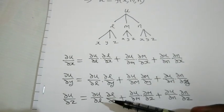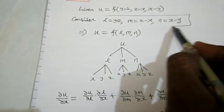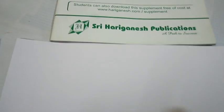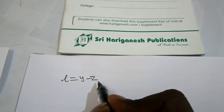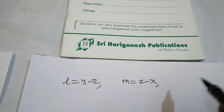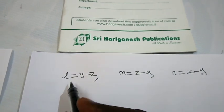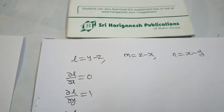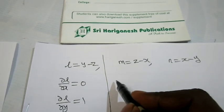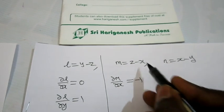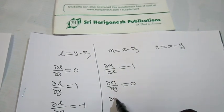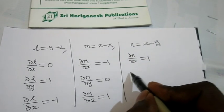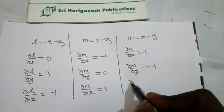From l = y−z: ∂l/∂x = 0, ∂l/∂y = 1, ∂l/∂z = −1. From m = z−x: ∂m/∂x = −1, ∂m/∂y = 0, ∂m/∂z = 1. From n = x−y: ∂n/∂x = 1, ∂n/∂y = −1, ∂n/∂z = 0. We substitute these values into the formulas and then add all three results together to find ∂u/∂x + ∂u/∂y + ∂u/∂z.